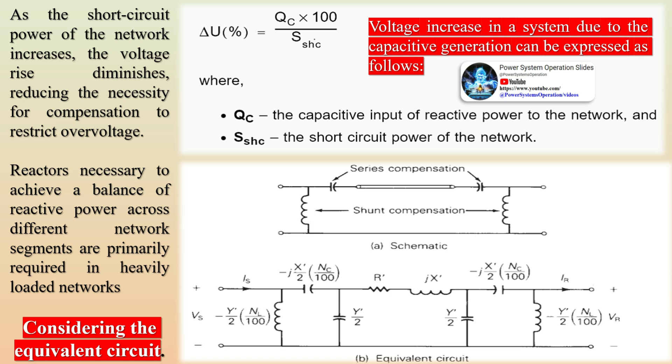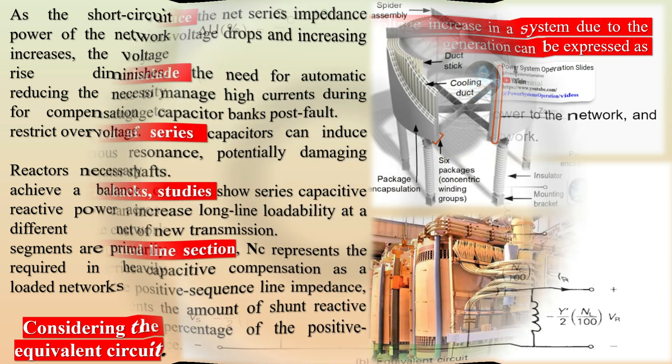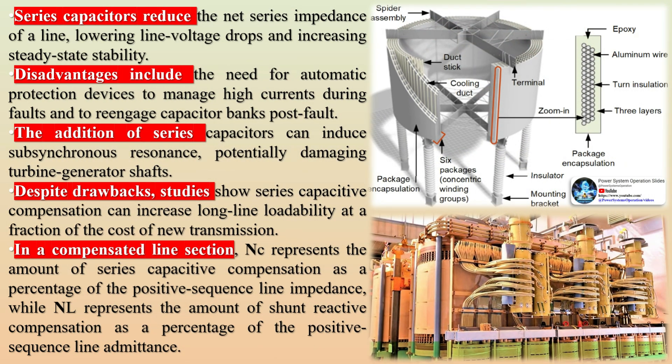The shunt reactor compensates for the shunt capacitance and the charging current drawn by a transmission line. In the absence of compensation for charging current, the voltage at the receiving end of a long transmission line can exceed the voltage at the sending end by as much as 50%.